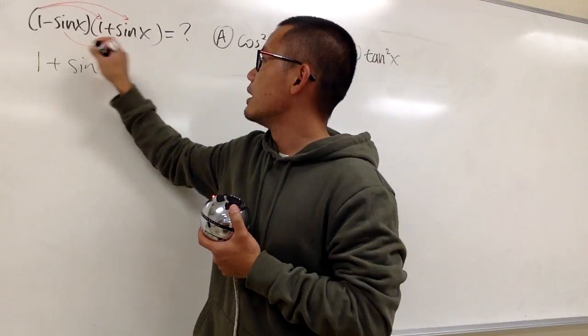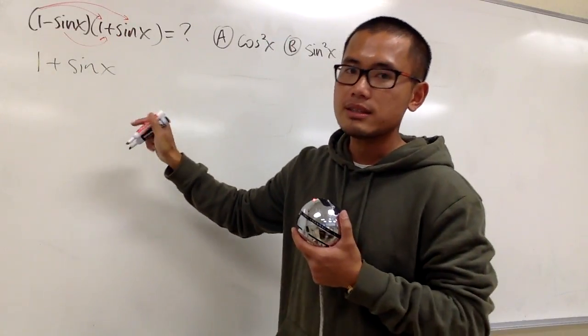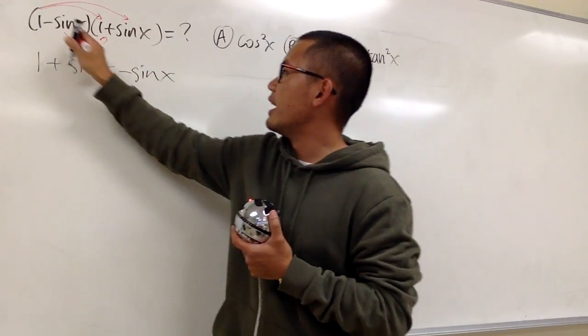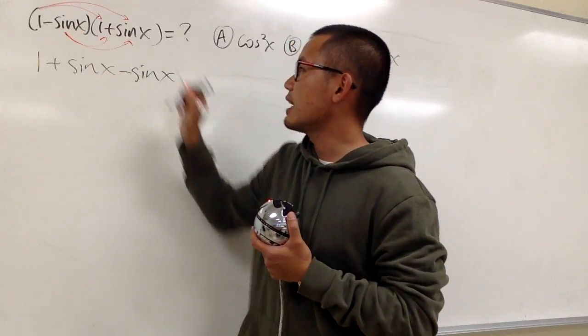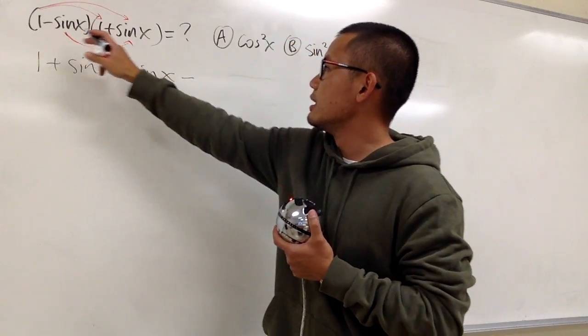We'll take this times that. This is negative sin x times 1, so that's negative sin x, and then negative sin x times plus sin x will be minus sin squared x.